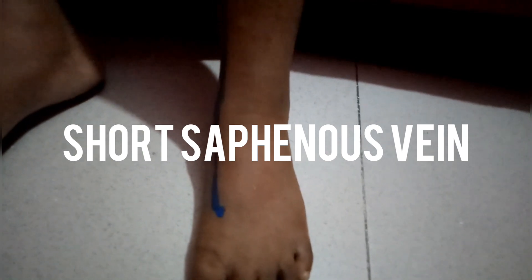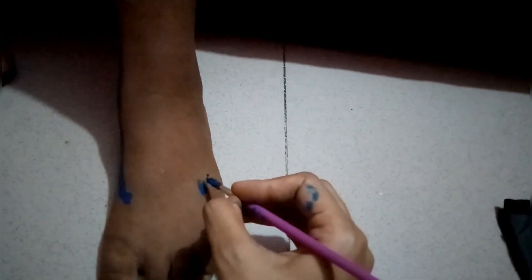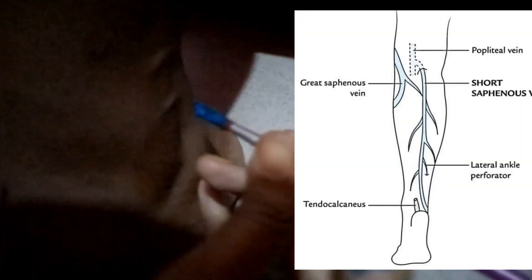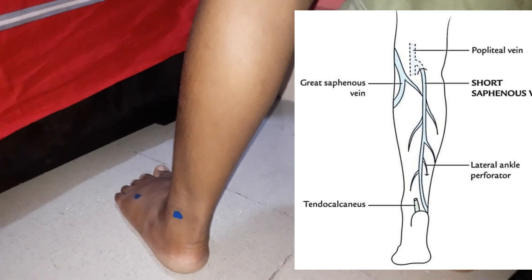Now, the short saphenous vein. It is formed by the lateral marginal vein with the lateral end of the dorsal venous arch, and it has 8 to 10 valves. For surface marking, the first point is on the dorsum of the foot at the lateral end of the dorsal venous arch. The second point is behind the lateral malleolus.